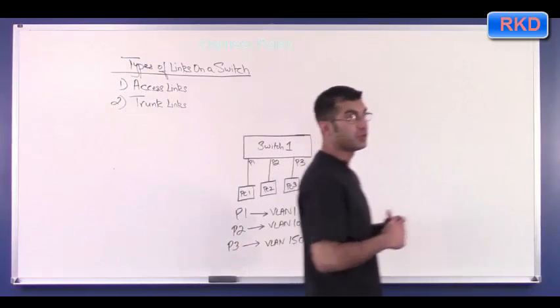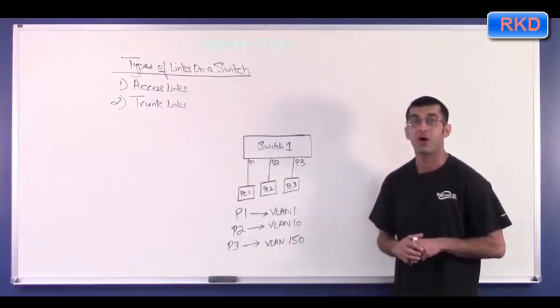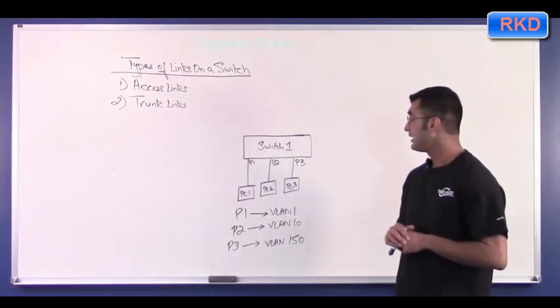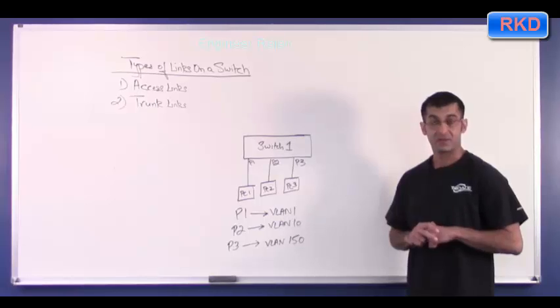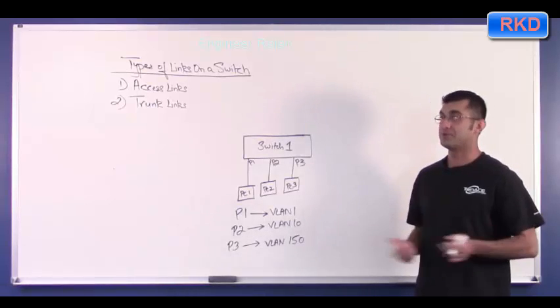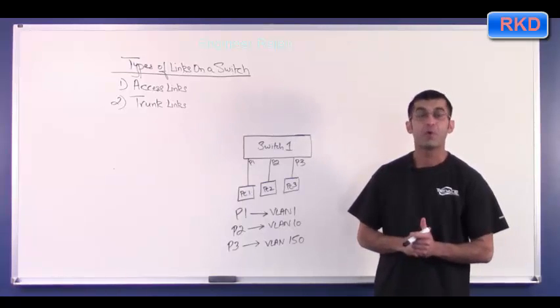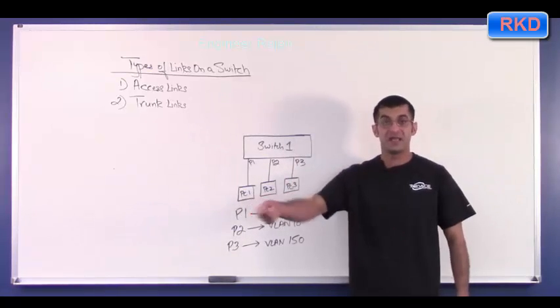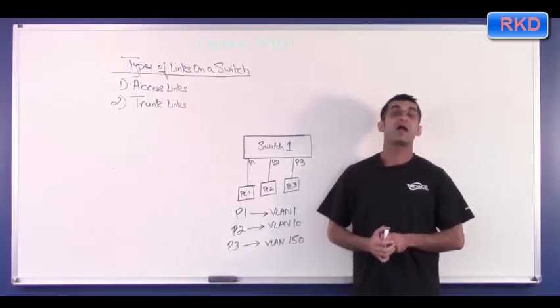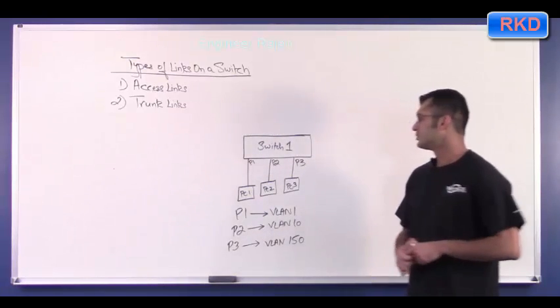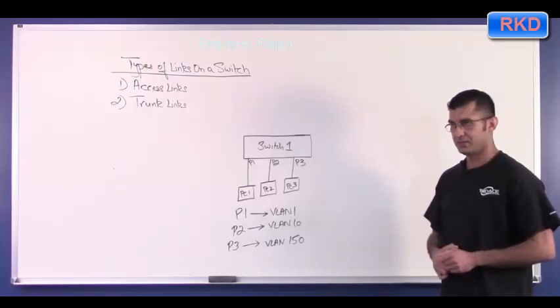So when a port on a switch only belongs to one VLAN or is part of only one VLAN, it is an access link. For the most part at your jobs, if you are network engineers or junior network engineers, all the switch ports that connect to PCs at the other end are access ports.